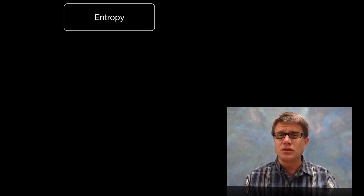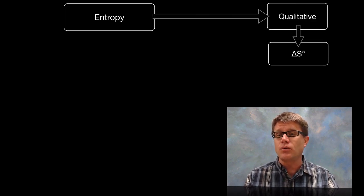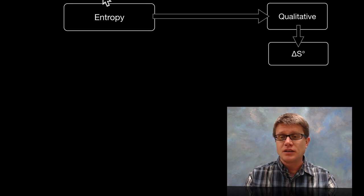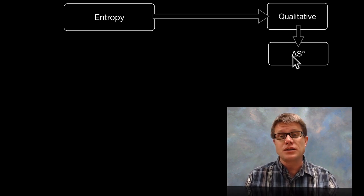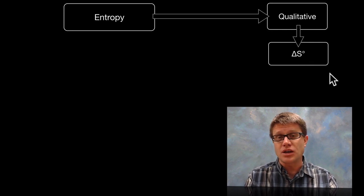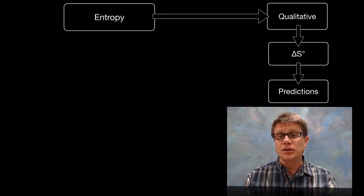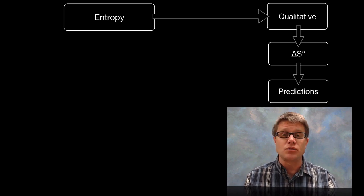And so entropy in AP Chemistry is not something that you'll have to calculate. You have to understand it qualitatively. In other words you have to look at a system and figure out what's happening to delta S. And so what is delta S? That's simply the change in entropy over time. Now what does this little degree symbol stand for? That means that we're measuring it at standard temperature and pressure. And so if we were to look at a system we should be able to make predictions about what's happening to our delta S. And that's what I hope you can do at the end of this.